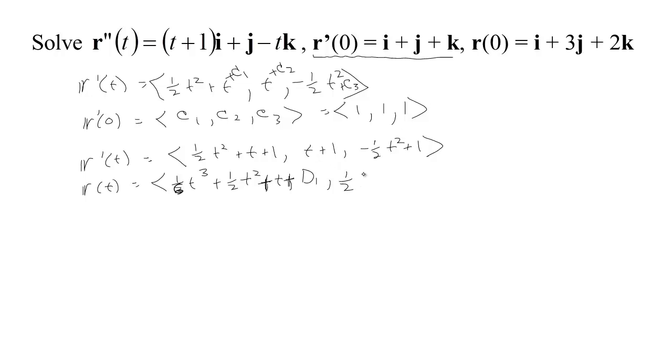Antiderivative of t would be 1 half t squared. Antiderivative of 1 would be t plus some constant, I'll call it d2. Antiderivative of negative 1 half t squared would be negative 1 sixth t cubed, the antiderivative of 1 would be t, and then a third constant, d3.